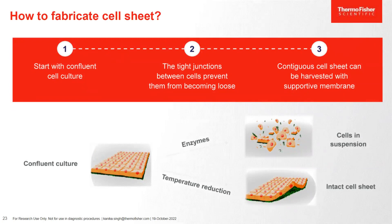How do you fabricate a cell sheet using the UpCell surface? First, we have to start with a confluent cell culture. We seed our cells in a way that after a certain period of time we get a fully confluent layer of cells on the surface, with tight junctions between cells, which would help them to come loose as a sheet. This sheet can then be harvested using a supportive membrane.